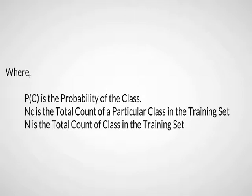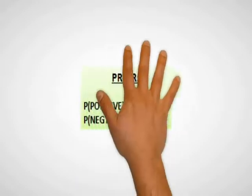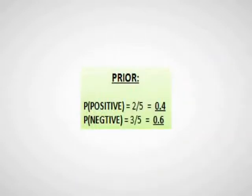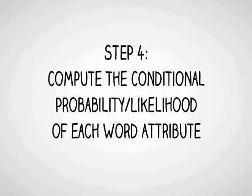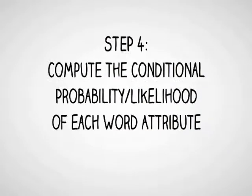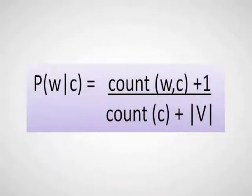Step 4: Compute the conditional probability likelihood of each word attribute. Compute conditional probability of each word attribute in test set. Use the conditional probability formula with Laplace smoothing to avoid zero frequency.